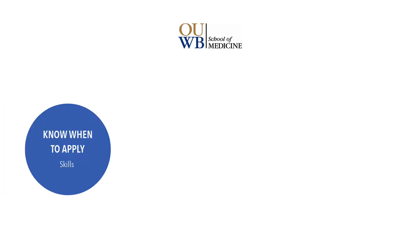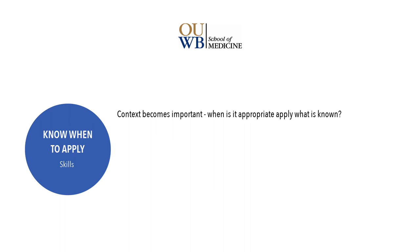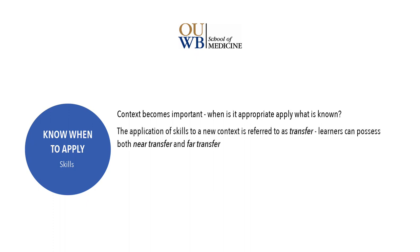Once students have an understanding of component skills and possess an ability to integrate those skills, the next phase of mastery involves knowing when to use those skills. If students acquire skills but do not know the appropriate conditions for their application, they may fail to apply skills relevant to a task or problem, or they may apply the wrong skills for the context. The application of skills to new contexts is referred to as transfer. There can be near transfer, when the learning context and transfer contexts are similar, and far transfer, when they are dissimilar.